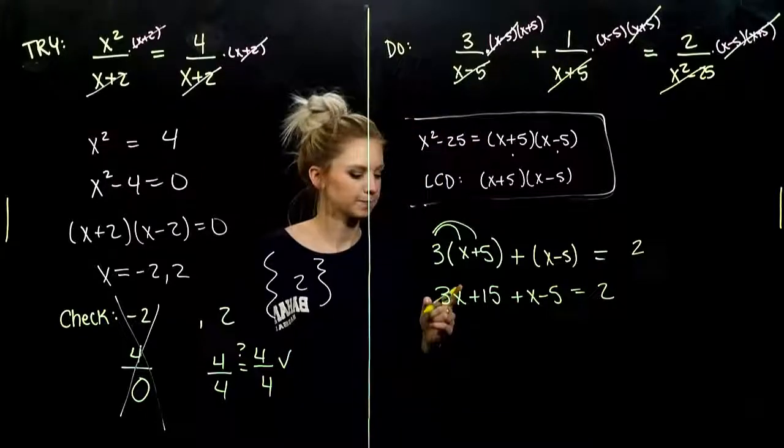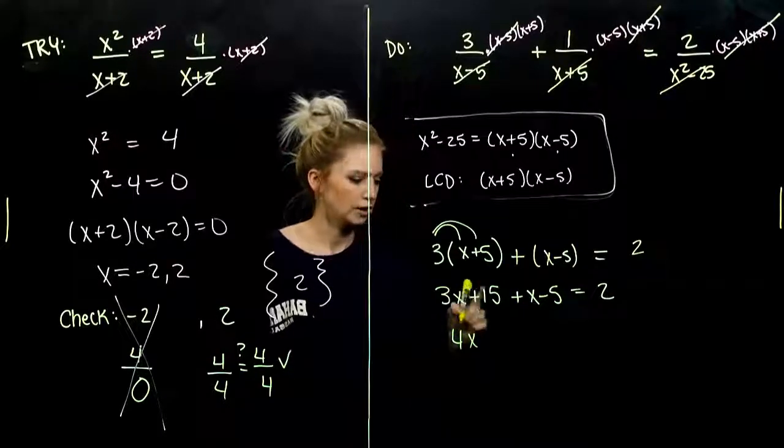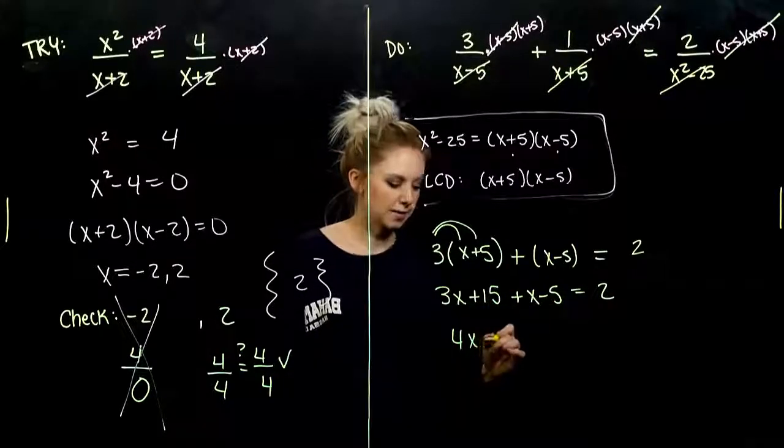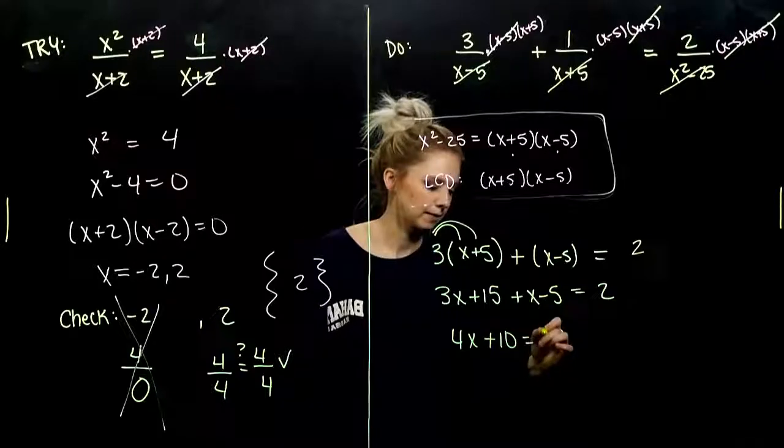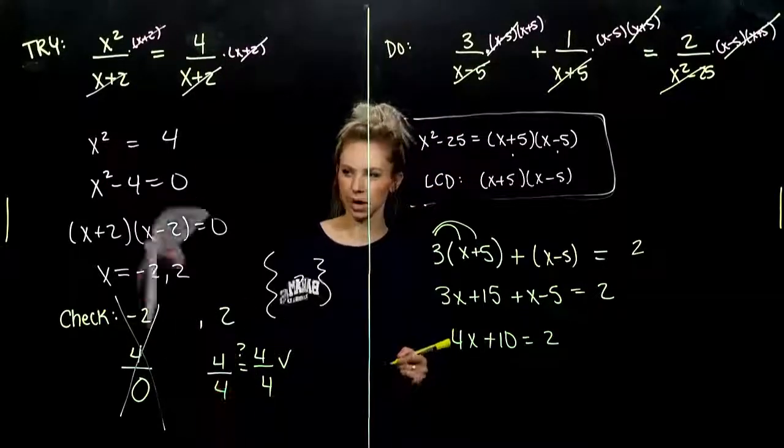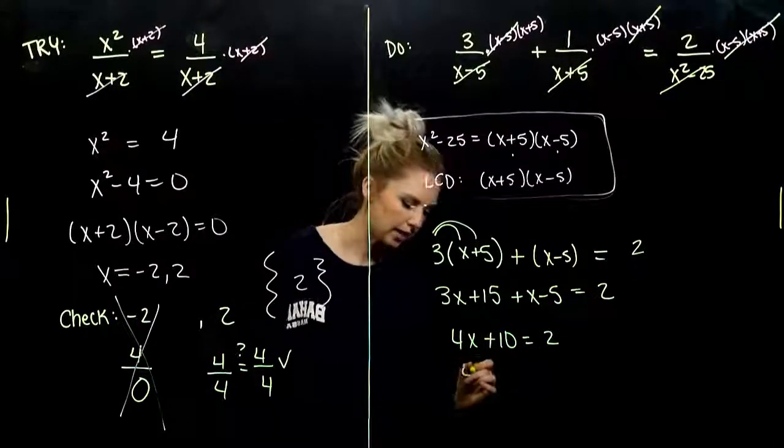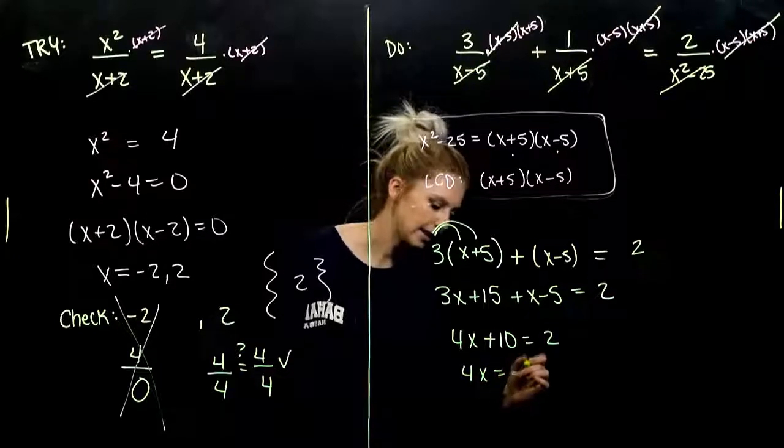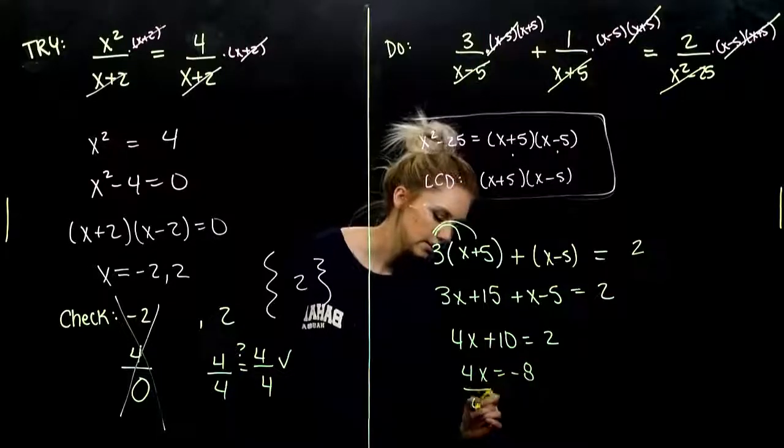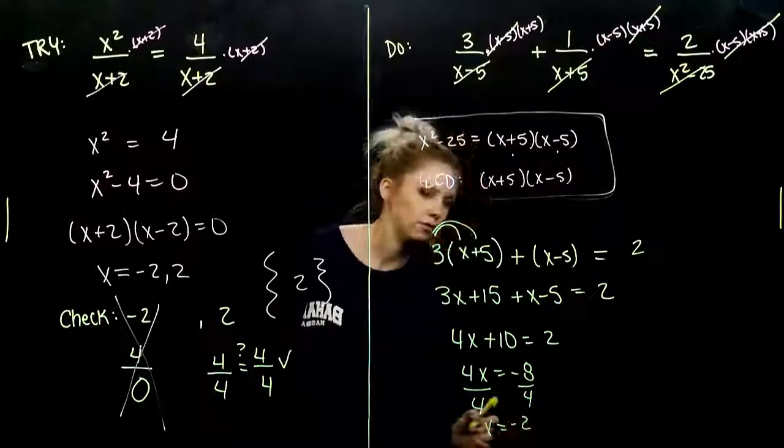And let's combine our like terms. 3X and one more gives me 4. 15 minus 5 gives me 10. And I have 2 over on the right. So, it's linear. It's not quadratic like we saw before. We can handle these no problem. So, subtracting 10. Looking at negative 8 on both sides. Divide by 4. X is equal to negative 2.